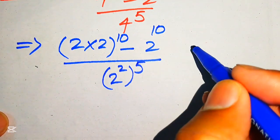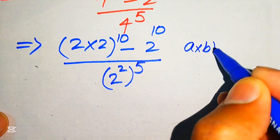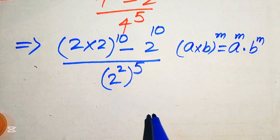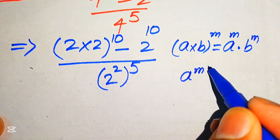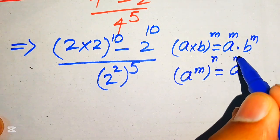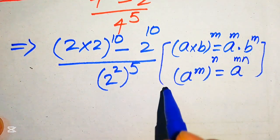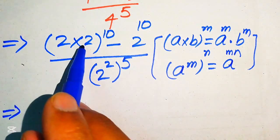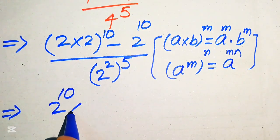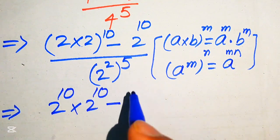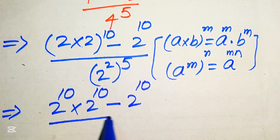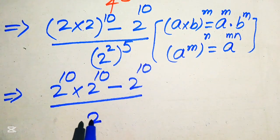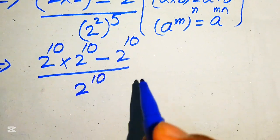After rewriting, we apply two exponent laws in the numerator: (a×b)^m = a^m × b^m, and (a^m)^n = a^(m×n). Applying these, the numerator becomes 2 to the power of 10 multiplied by 2 to the power of 10, minus 2 to the power of 10. In the denominator, multiplying the exponents gives 2 to the power of 10.